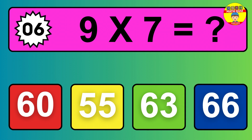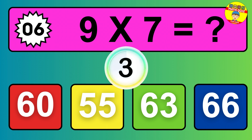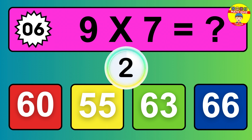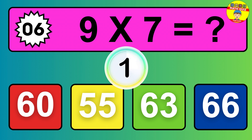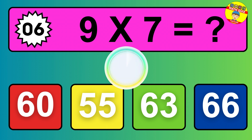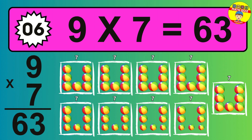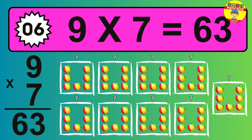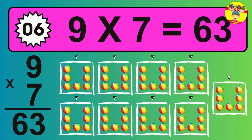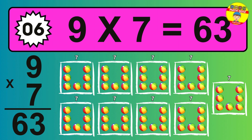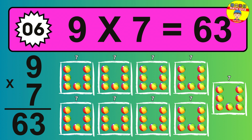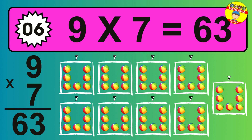Question 6. 9 times 7 equals what? The answer is 9 times 7 is 63. To calculate, we have 9 groups with 7 balls each one. So how many balls do we have? 63 balls.